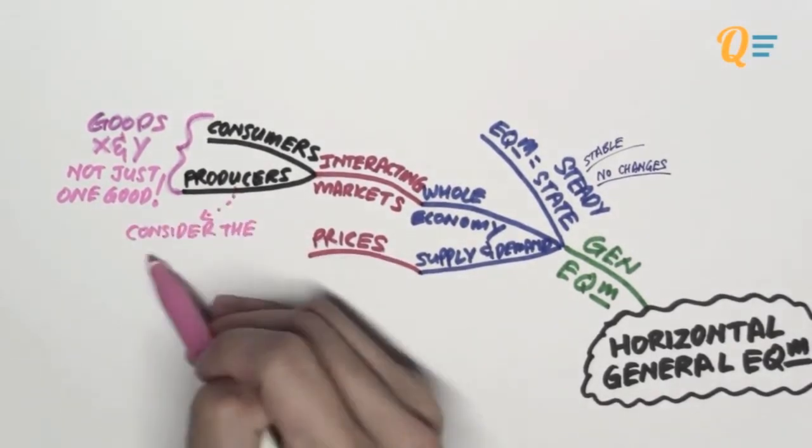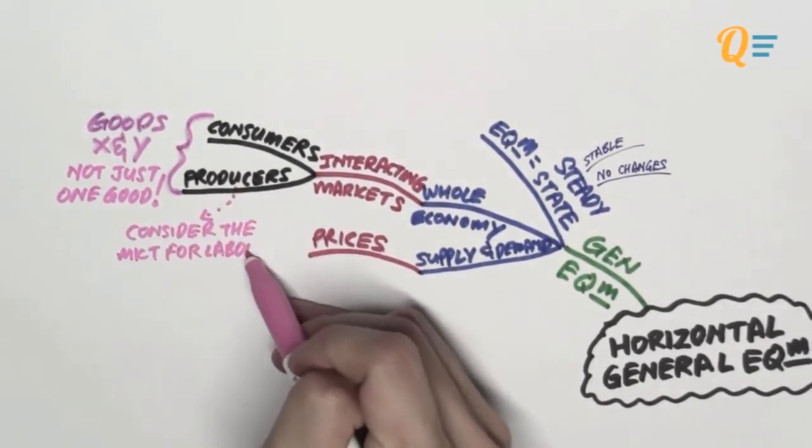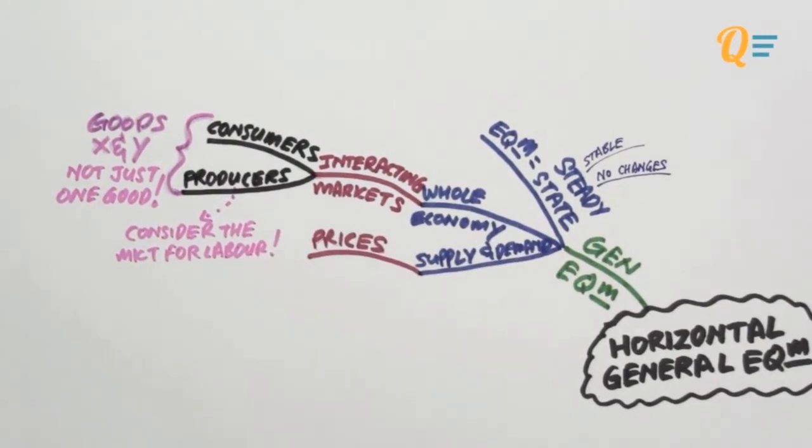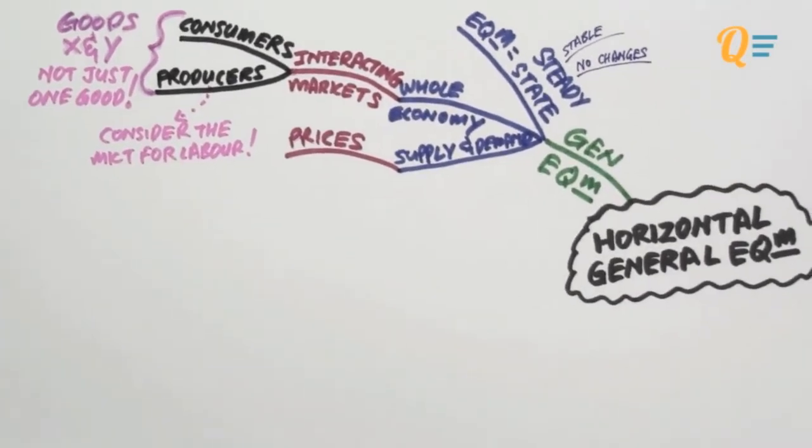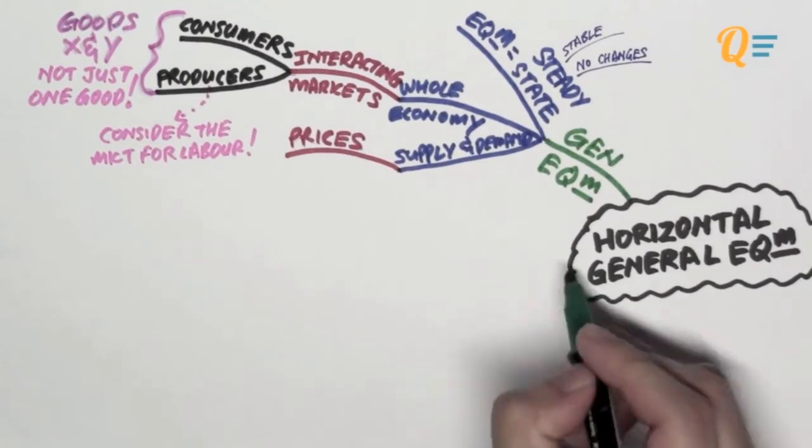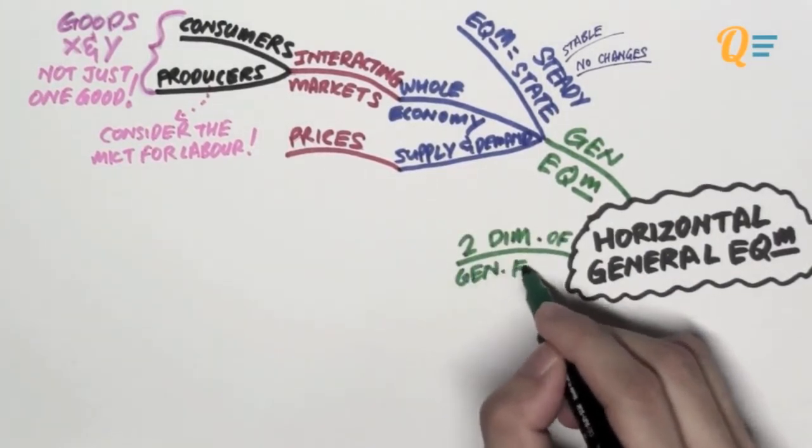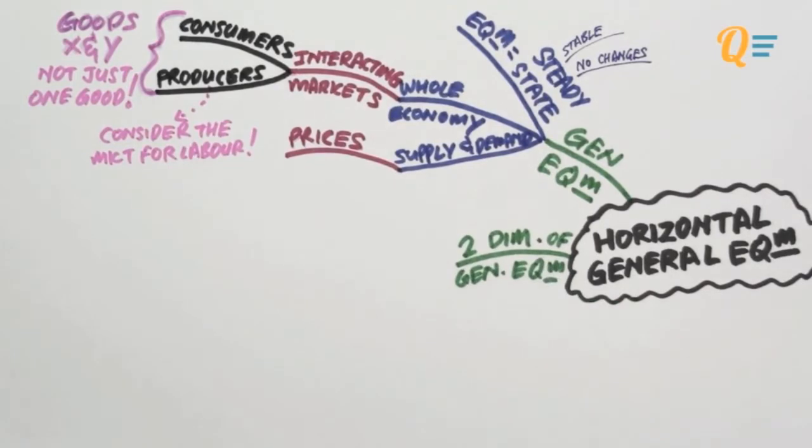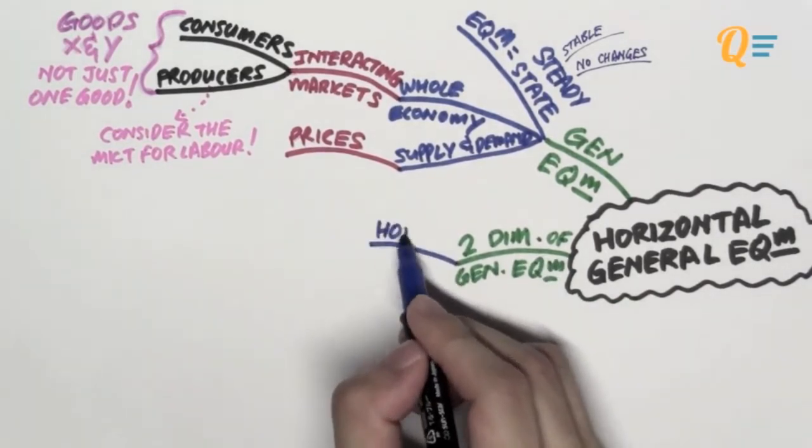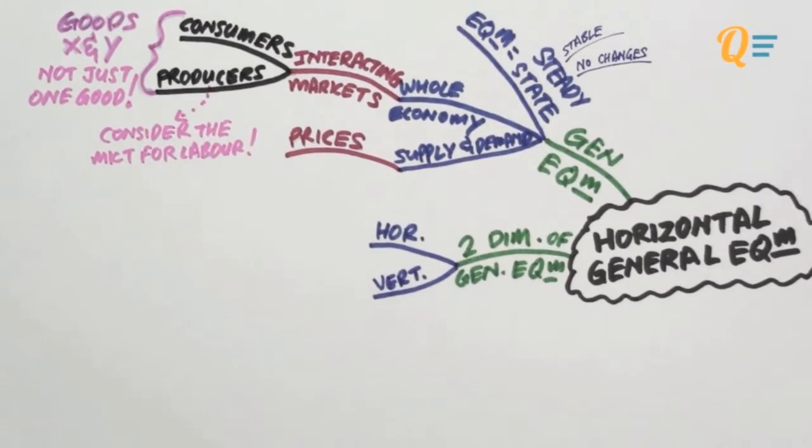When we talk about producers, you are also considering the market for labor. That might actually affect the goods market for X and Y itself. But for now we're just going to leave out the market for labor so that we can simplify things. There are two dimensions of general equilibrium: horizontal general equilibrium, which we are talking about today, and vertical general equilibrium, which we'll be talking about in another video.